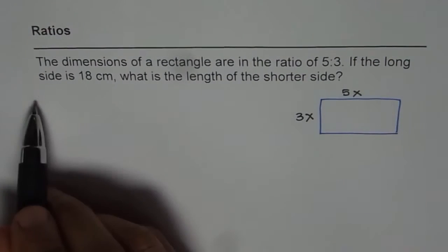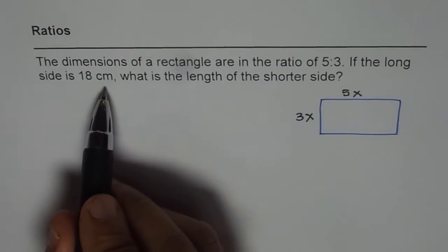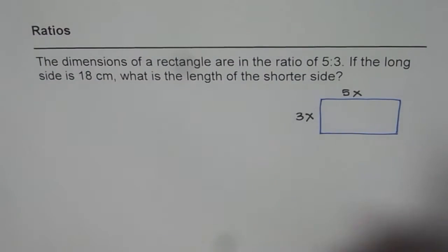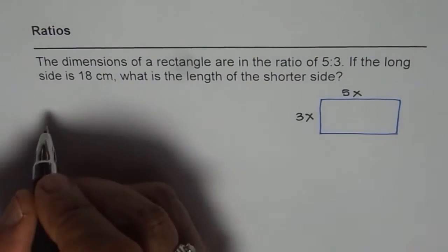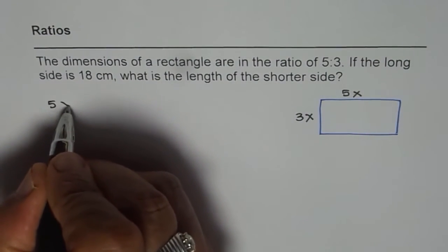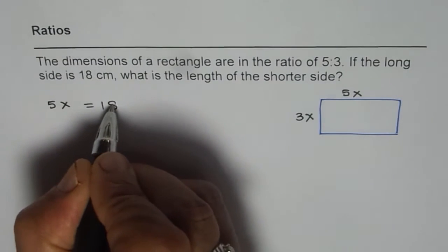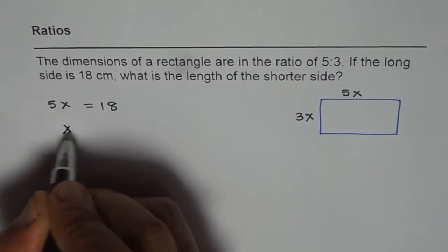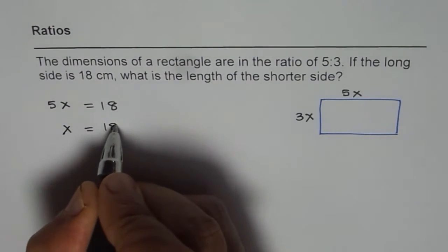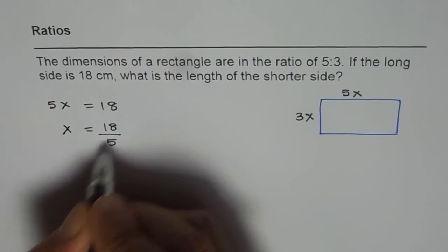If the long side is 18 cm, what is the length of the shorter side? That is the question. So what we have here is the long side is 5x. So we have 5x equals 18. That means x equals 18 divided by 5.